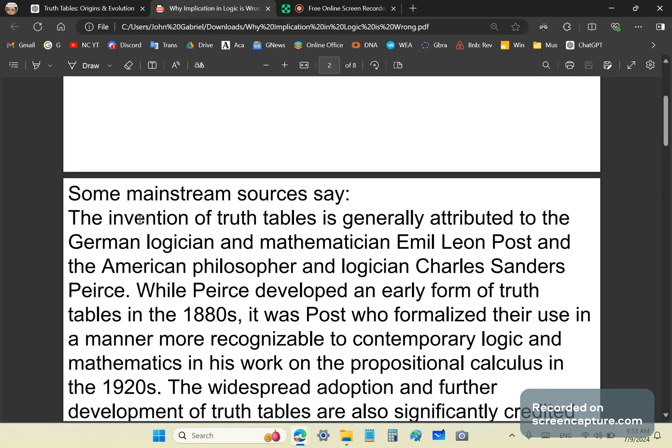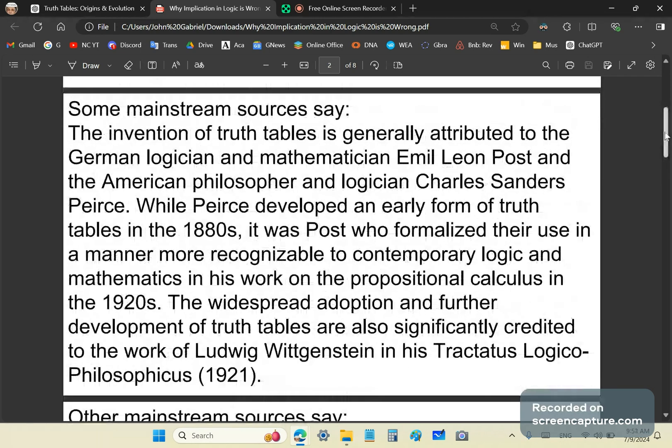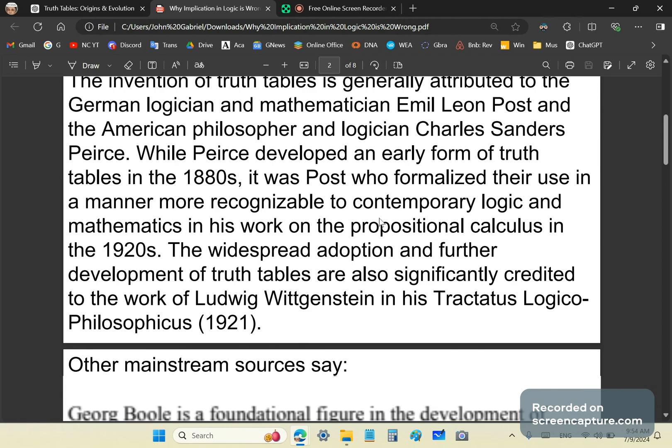Some mainstream sources will tell you that Emile Leon Post and Charles Sanders were amongst the first to put together the early form of truth tables. And that prize idiot Ludwig Wittgenstein in his Tractatus apparently was the person who put these garbage concepts on the map.